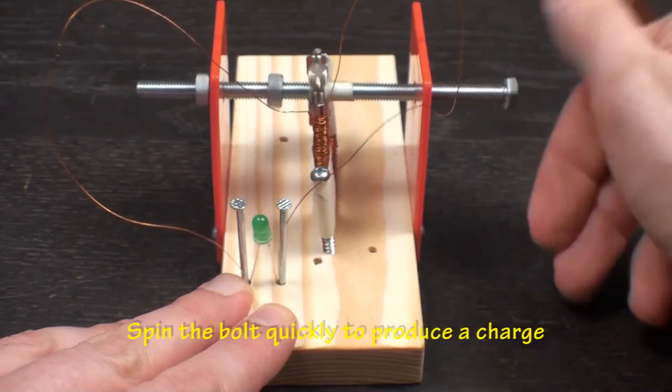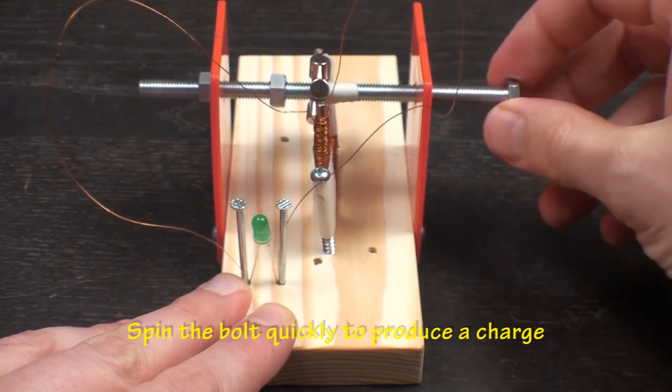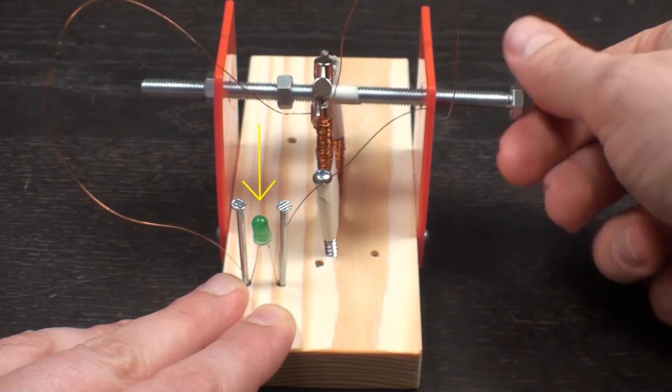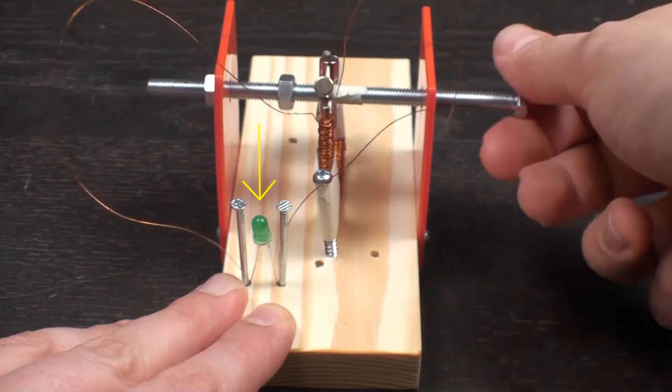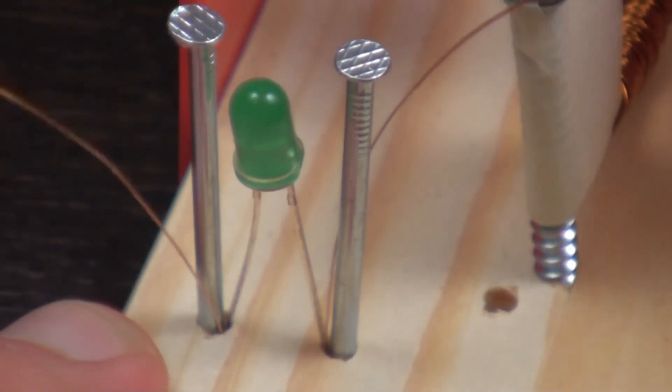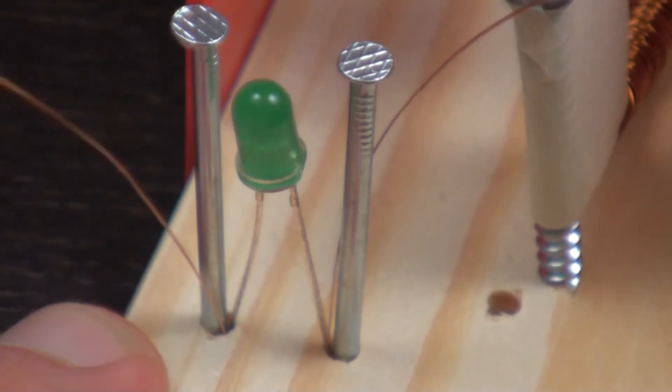Twist or flick the bolt quickly to get the magnetic rotor to spin. Look for the small flash from the LED. Going further, try adding more coils to the generator and watch the light get brighter. Have fun!